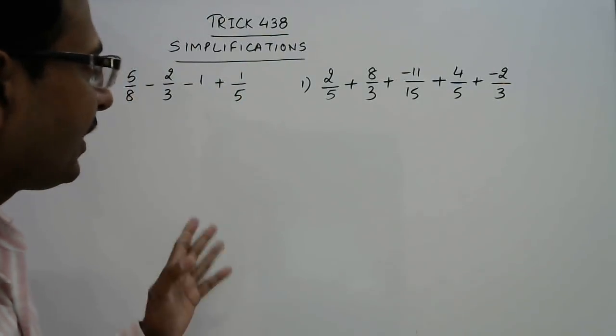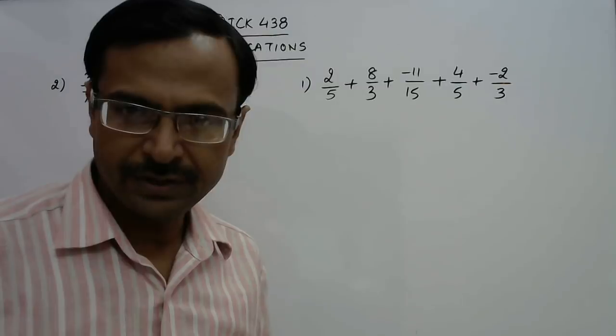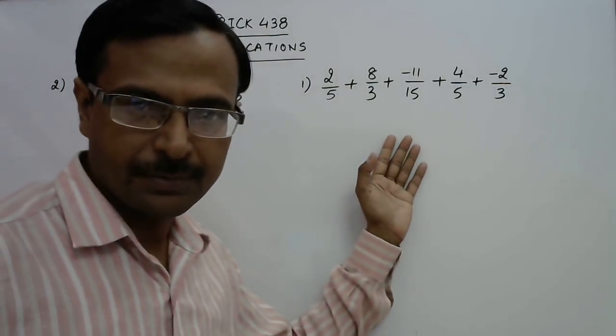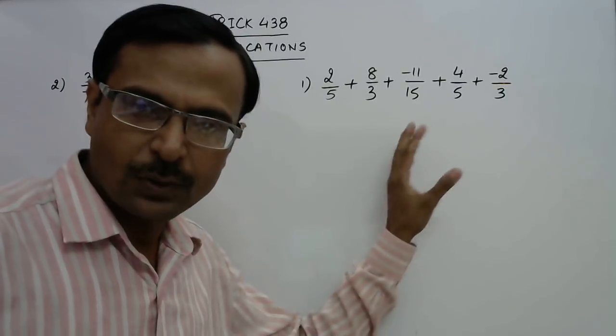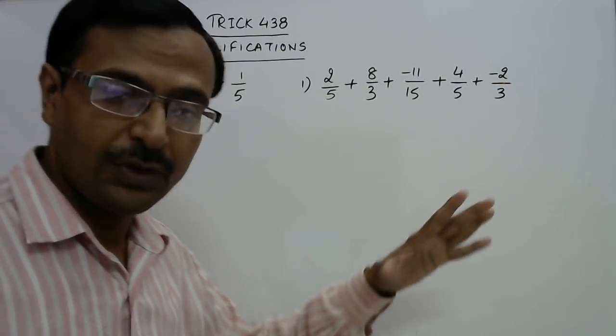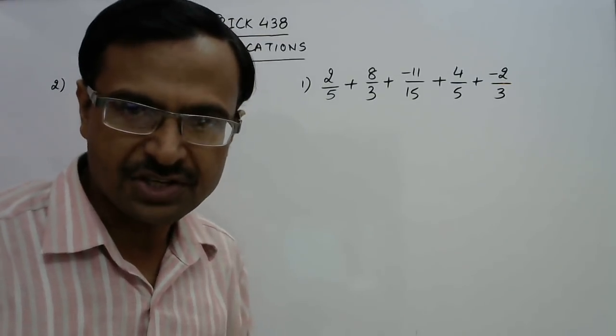Hello friends, trick number 438 and I am here with two more simplification problems of rational numbers. As you can see on the board we have five rational numbers here and we need to simplify this into a single rational number.